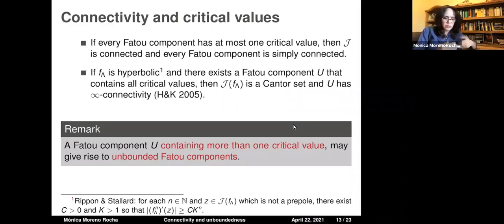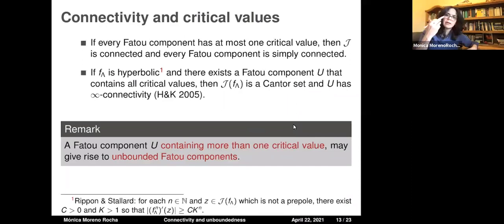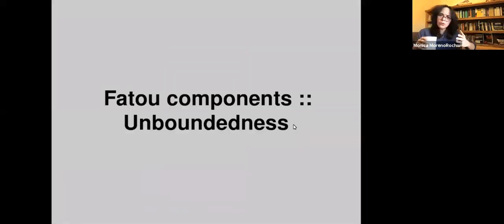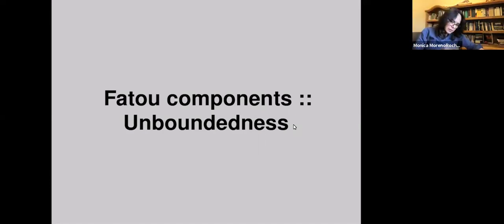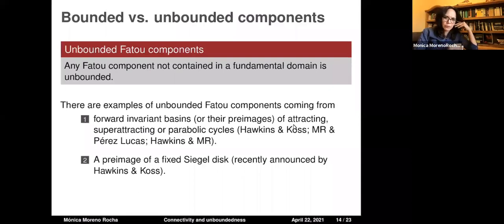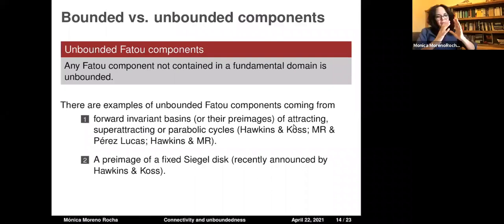Because of the double periodicity, there is a beautiful connection between having one Fatou component with more than one critical value and having unbounded Fatou components. Let me use that to move to the final part of the talk: unbounded components. I want to use this relation between critical values and unbounded components. Since there are no Baker domains and no wandering domains, an unbounded Fatou component for an elliptic function is simply a Fatou component that is not contained in any fundamental domain — if it overflows the fundamental domain, by periodicity it must be unbounded.